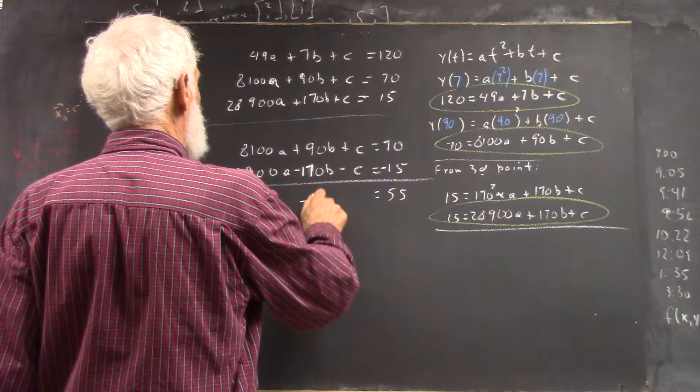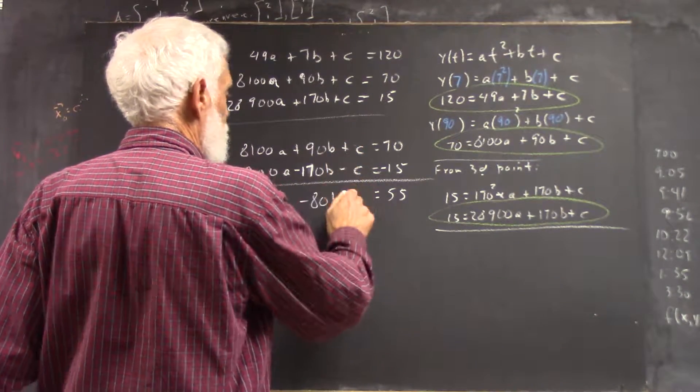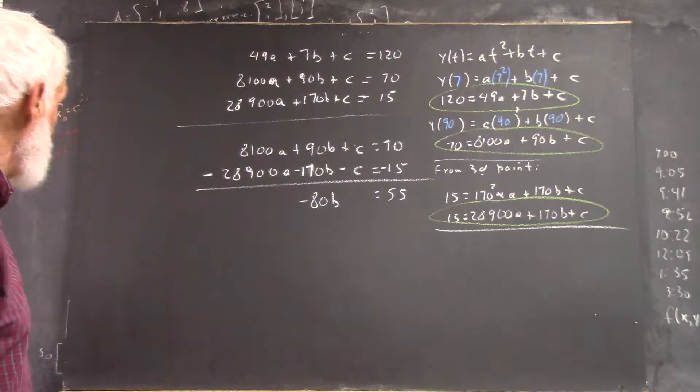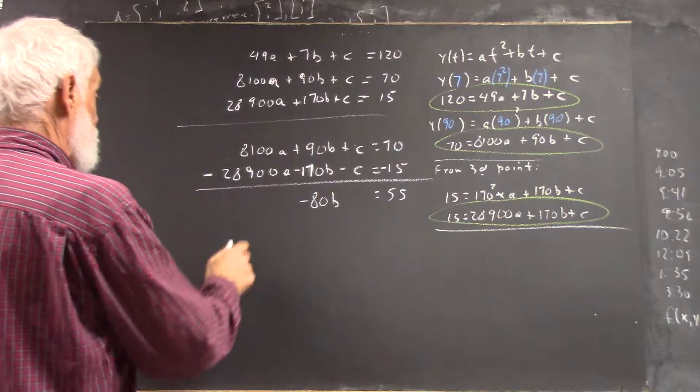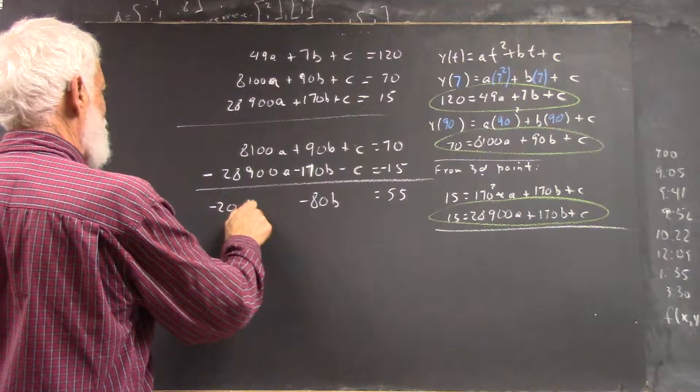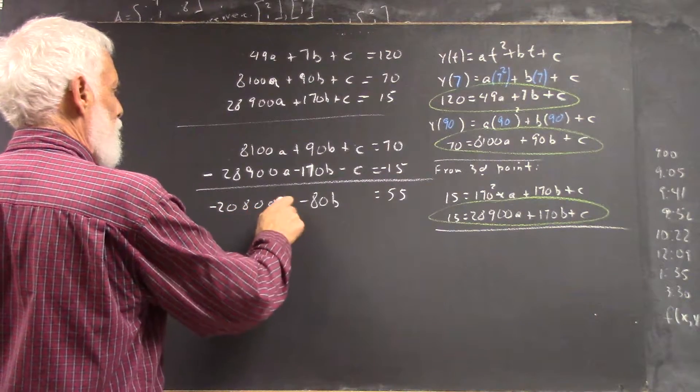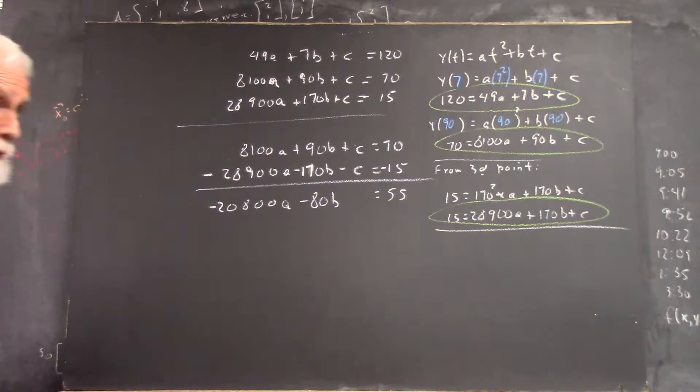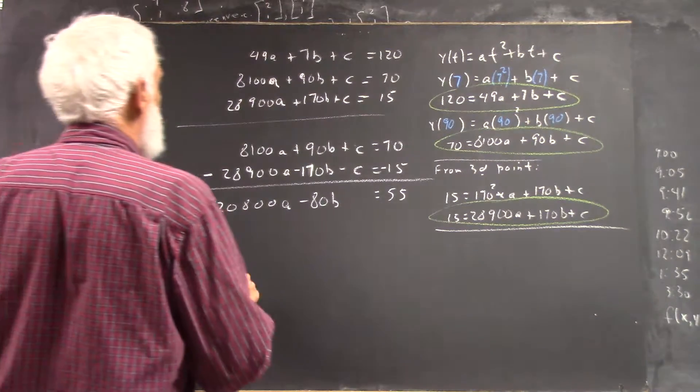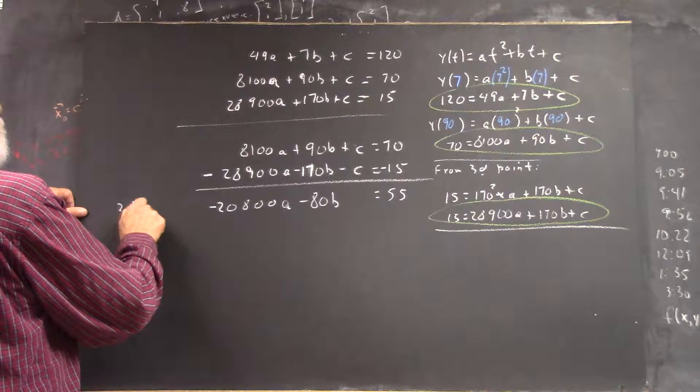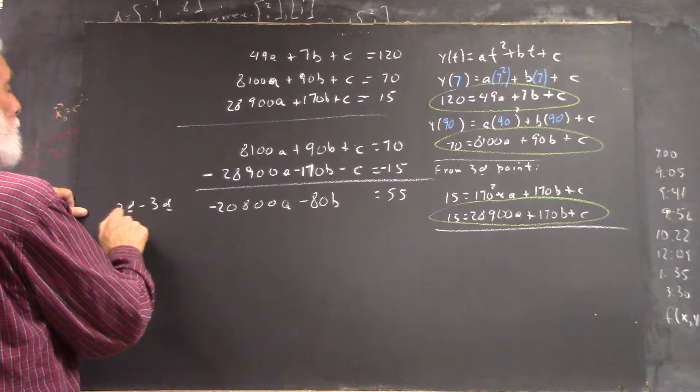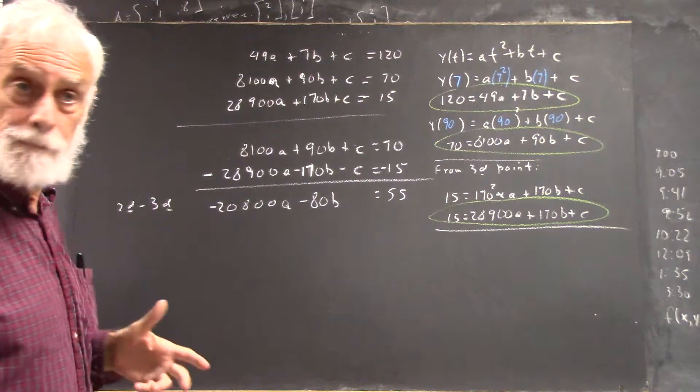So we got negative 80B. I don't write anything down for zero because I don't want to write an extra step, we're about out of time. And then I do this, right? Which gives me negative 20,800. Okay? That make sense? Now, so this is the second equation minus the third, right?